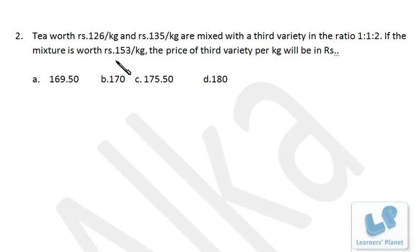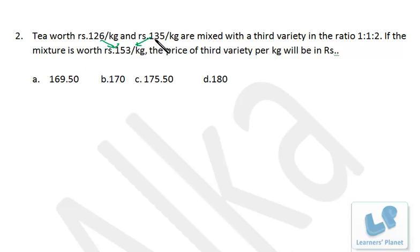It's a very simple problem. The cost of the mixture is 153. This makes a difference of 27 from the first variety (126), so we have a loss of 27. And from the second variety (135), the difference is 18 rupees. So 27 plus 18 gives a total loss of 45 rupees, which has to be compensated by the third variety.